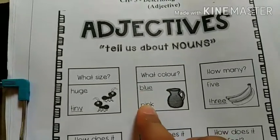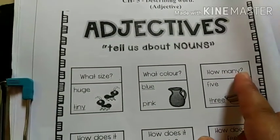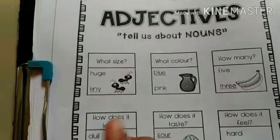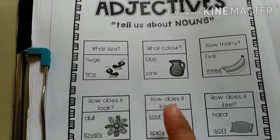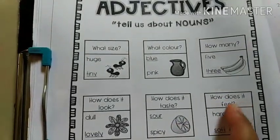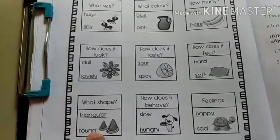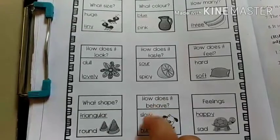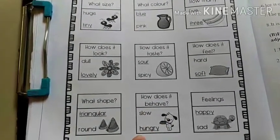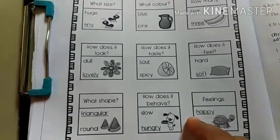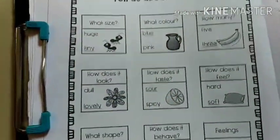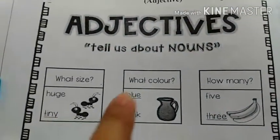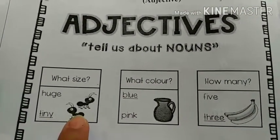How does it taste? Sour or spicy? How does it feel? Hot or soft? What's the shape? Triangular or round? How does it behave? Slow or hungry? Feeling happy or sad? These all are adjectives. The underlined words are the answers: huge, blue, three, lovely, sour, soft, triangular, hungry, happy.